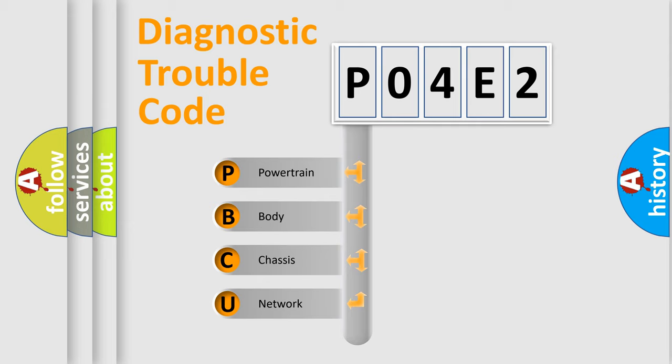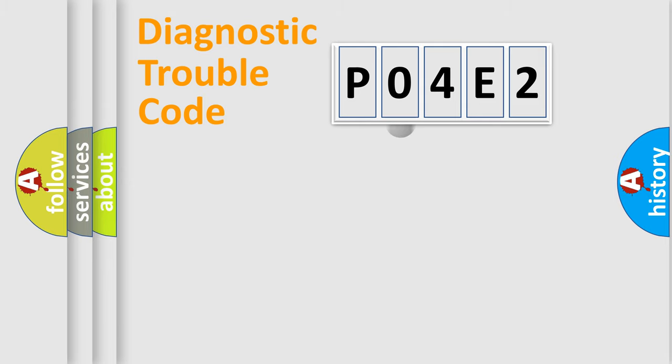We divide the electric system of an automobile into four basic units: Powertrain, Body, Chassis, and Network. This distribution is defined in the first character code.